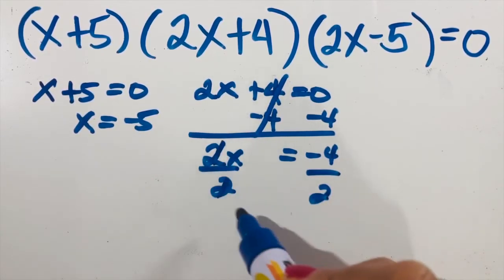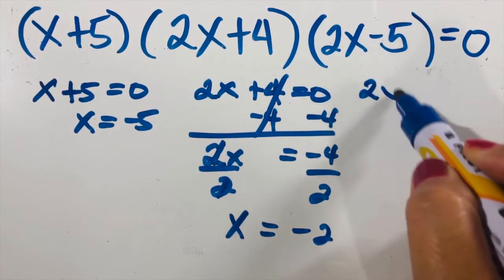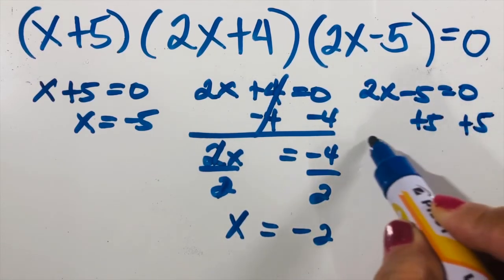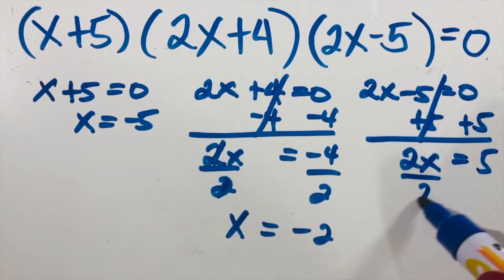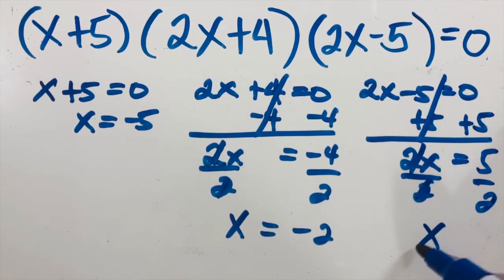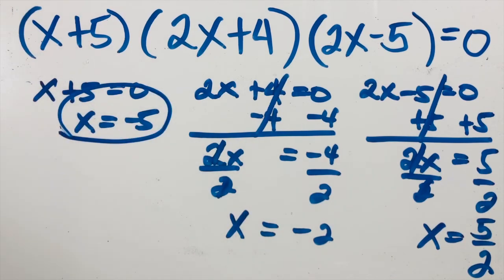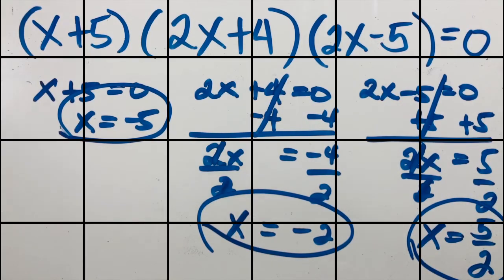Dividing by two gives x equals negative two. For the third factor, 2x minus five equals zero: add five on both sides, so 2x equals five, then divide by two, giving x equals five over two. So in this example we have three solutions: x equals negative five, x equals negative two, and x equals five over two.